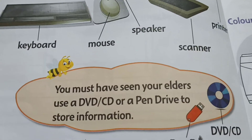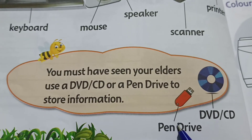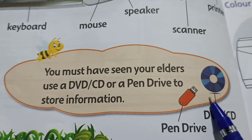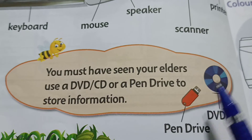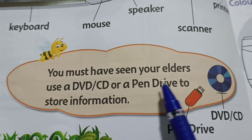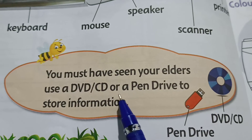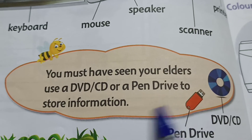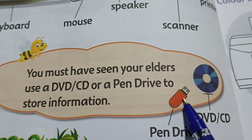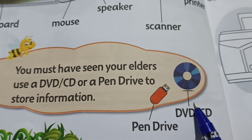And what is this, children? This is a pen drive. It stores all the information. Even the CD also stores all the information. You must have seen your elders use a DVD, CD, or a pen drive to store information. Whatever information they need, they can store in the pen drive.